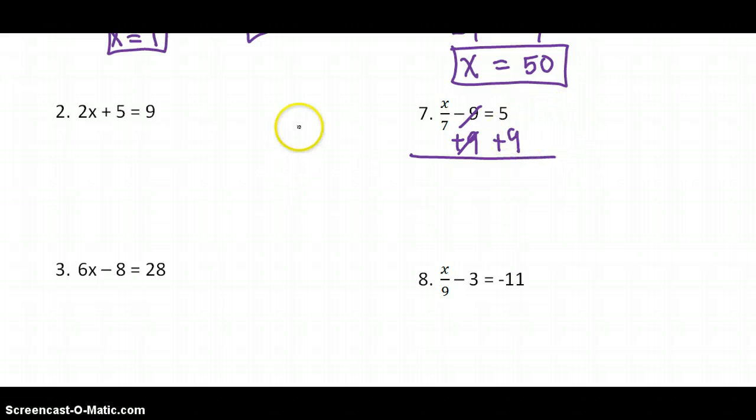We're keeping our teeter-totter. We talked about it being like a teeter-totter. We want it to be equal. If we subtract from one side, then it makes it lighter than the other side. So we're trying to keep everything equal. So we add 9 to both sides. And x over 7 equals, and 5 plus 9 is 14.